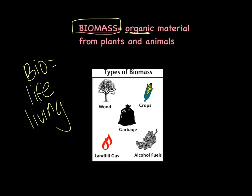Here you have different types of biomass: crops, wood, garbage, landfill gas, alcohol fuels. Those are different types of biomass, and we're going to be looking at that when we start talking especially about composting.